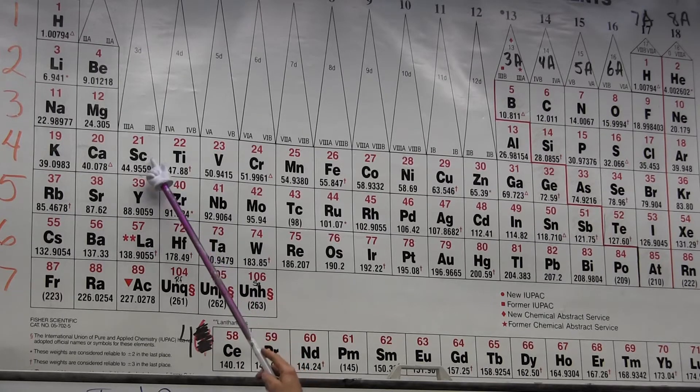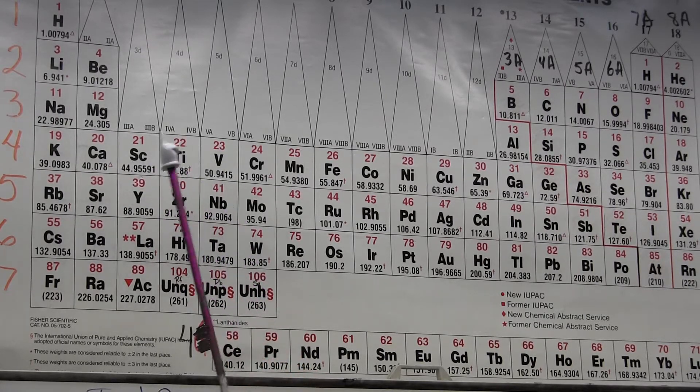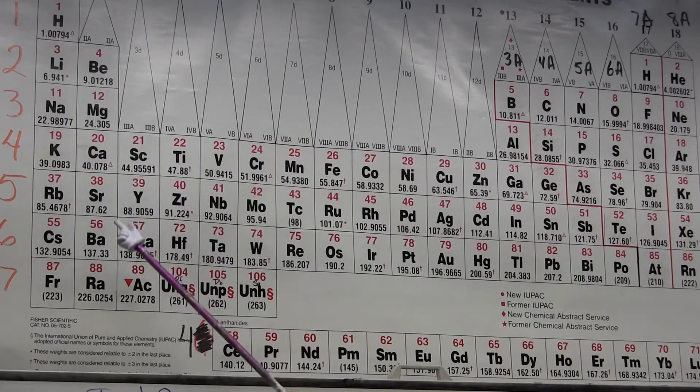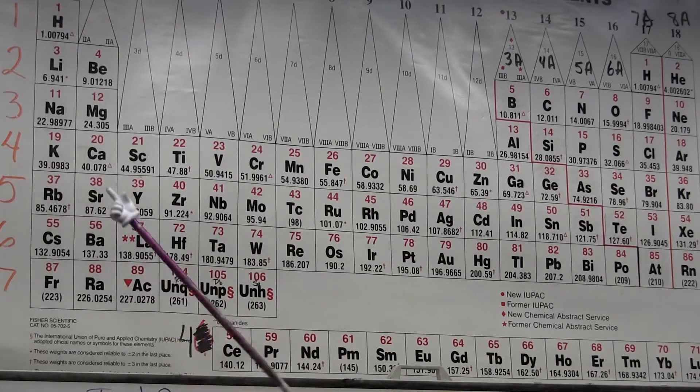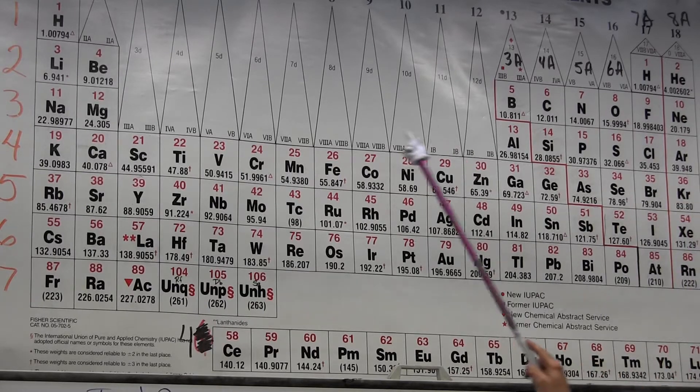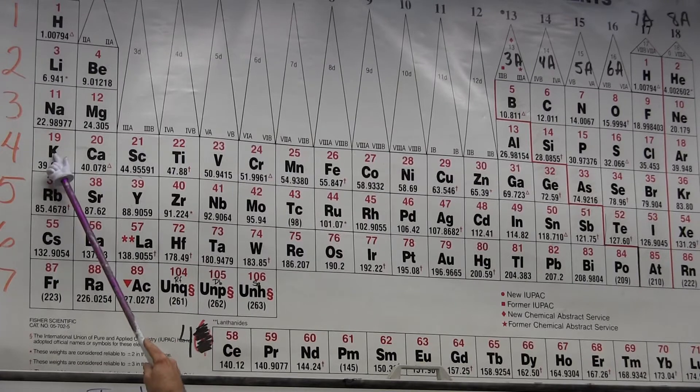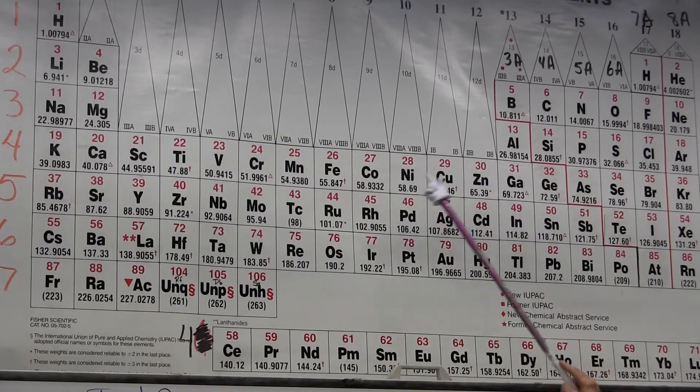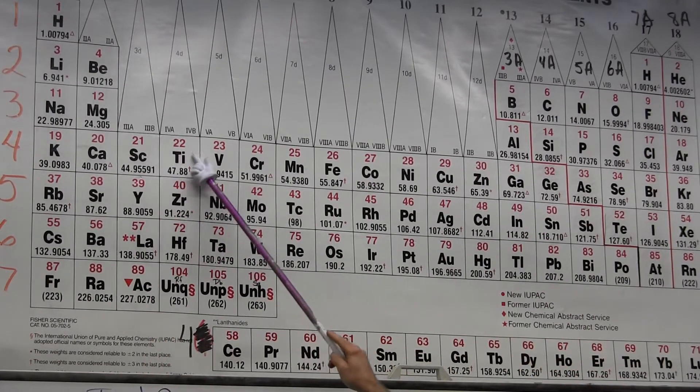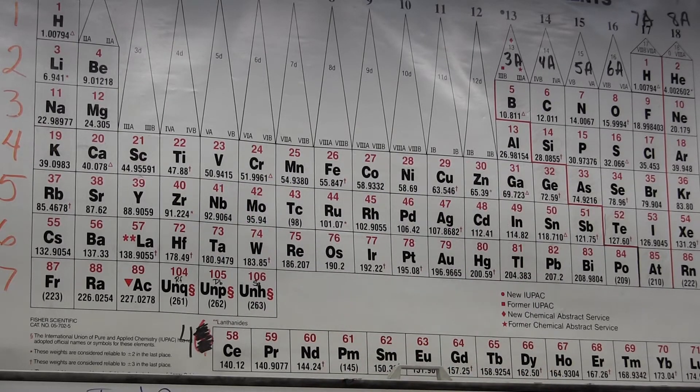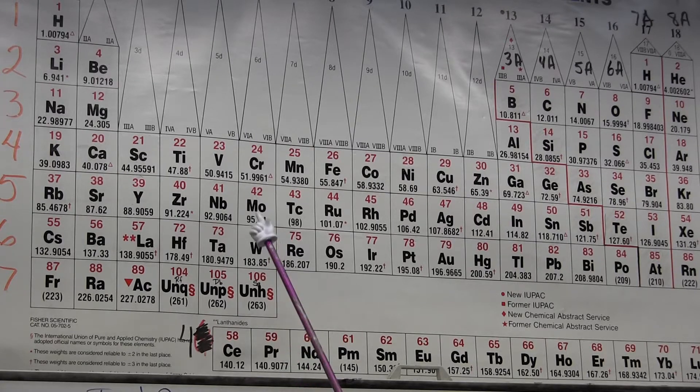Now, because the 3d electrons are actually higher in energy than the 4s electrons, I'm going to come to the next row and start filling the 4s before I start to fill the 3d's. These correspond to the 3d electrons.